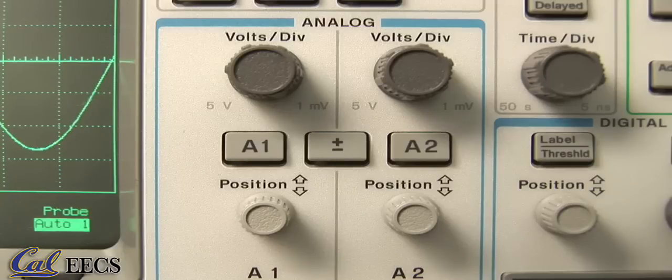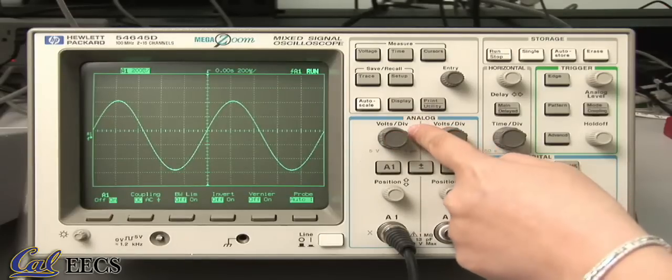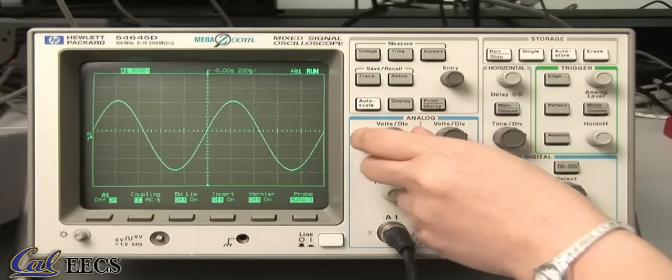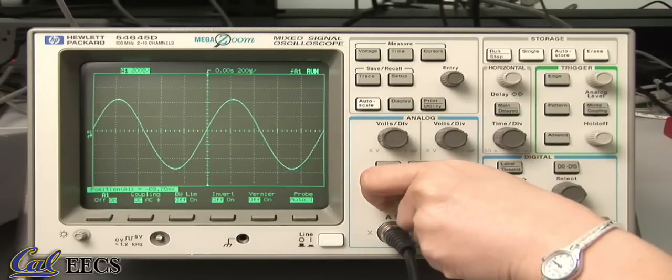The first thing we will do is understand the analog features. Each channel has a calibrated gain knob, which sets the scale of volts per div on the screen. You can also vary the position of the waveform on the oscilloscope using the position knob.